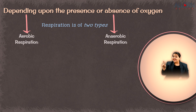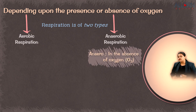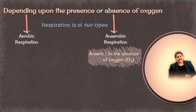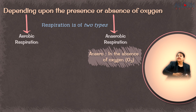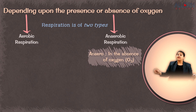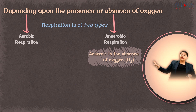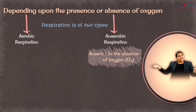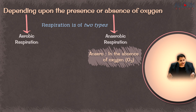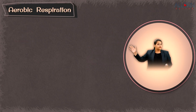Anaerobic respiration involves the absence of oxygen. With no oxygen, there is no sufficient oxidation, which means breakdown of glucose cannot be completely achieved. Something else will be produced instead, and the amount of energy obtained will also be reduced.